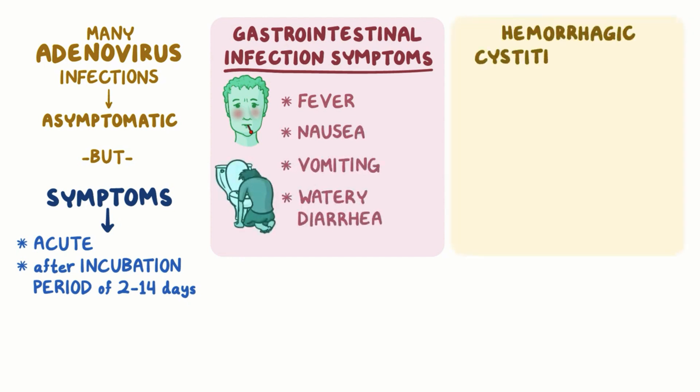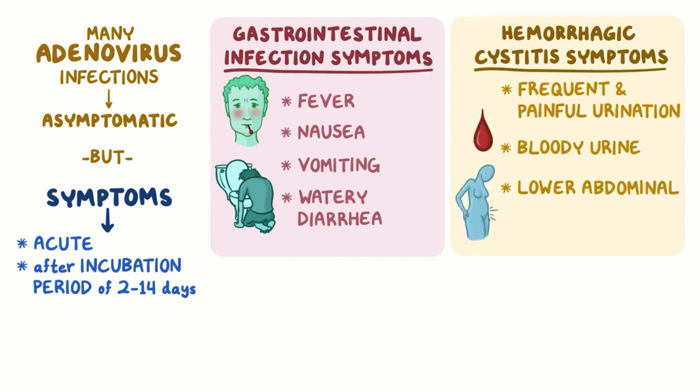Hemorrhagic cystitis presents with frequent and painful urination, bloody urine, and lower abdominal pain.